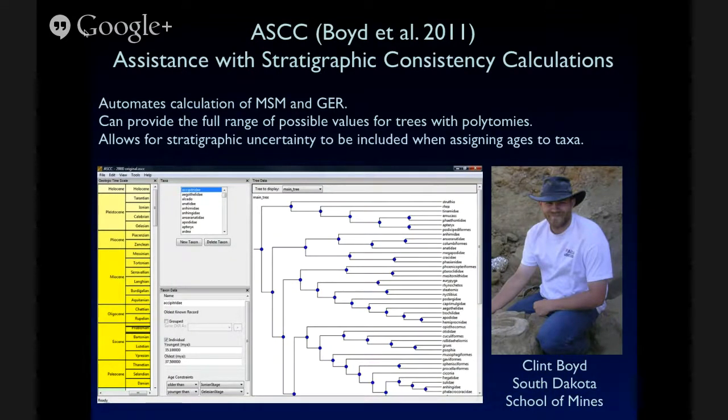So all of these things can be calculated automatically using a really neat program called Ask that was created by Clint Boyd. And this is assistance with stratigraphic consistency calculations. And I think these methods are relatively underused. They're easy to calculate now. And they don't have to be limited to groups that are only represented by fossils. We can also apply them to living groups. For example, look at the oldest occurrences of different families of mammals or reptiles, and compare phylogenies that way. So this program automates calculation of all of those values. And what's great about Ask is it allows us to accommodate uncertainty.